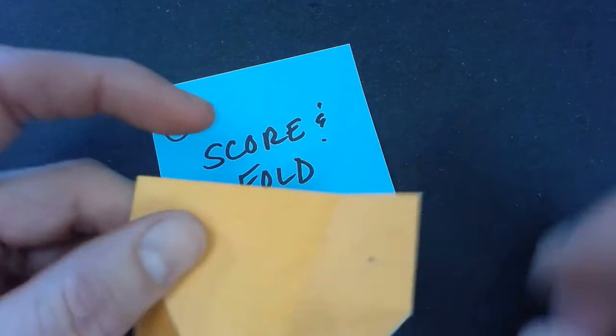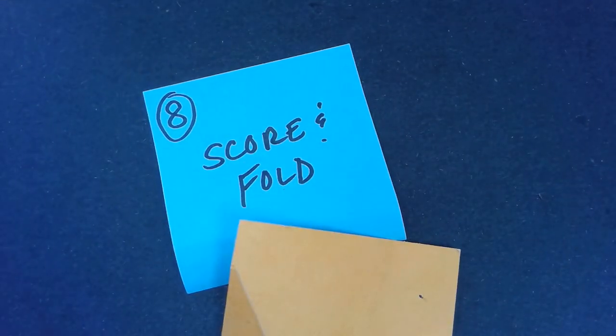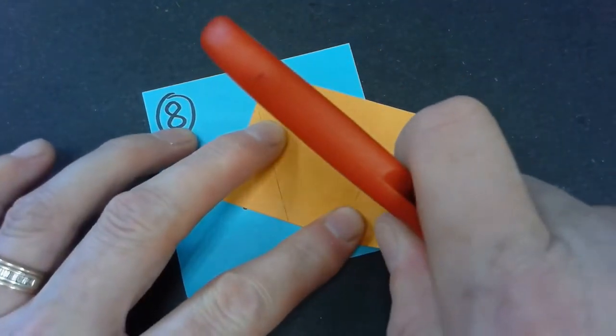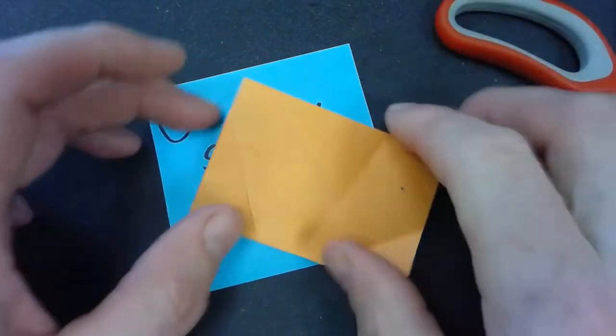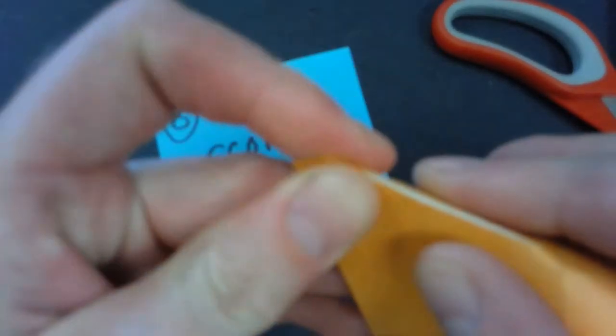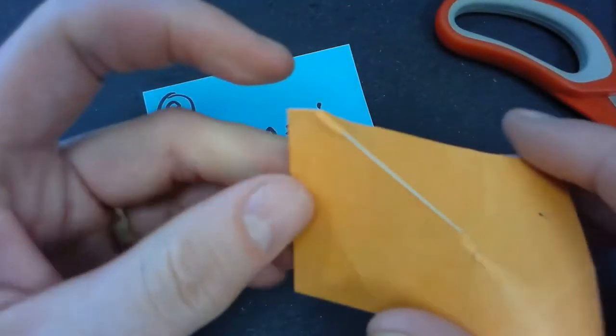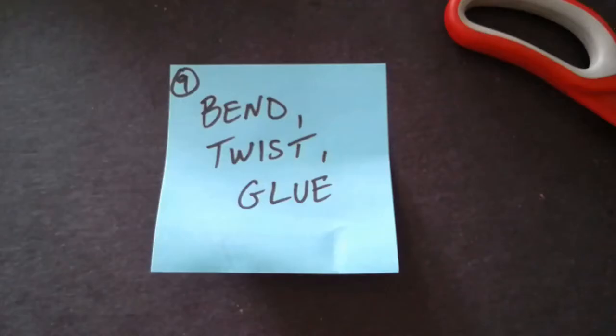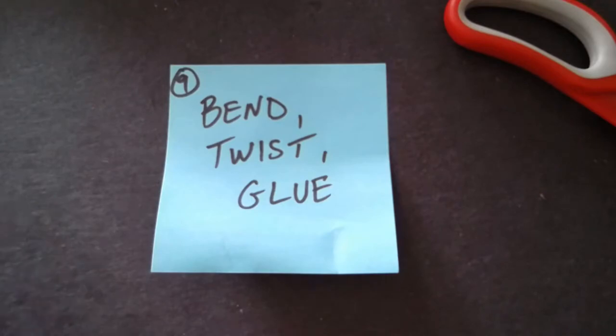And you can also score if you don't have an exacto knife. If you just open your scissors all the way up and just use your scissors as what you're scoring the paper with, it'll help you bend that heavier weight paper better. And this usually works a little bit better with strips, just to demonstrate.